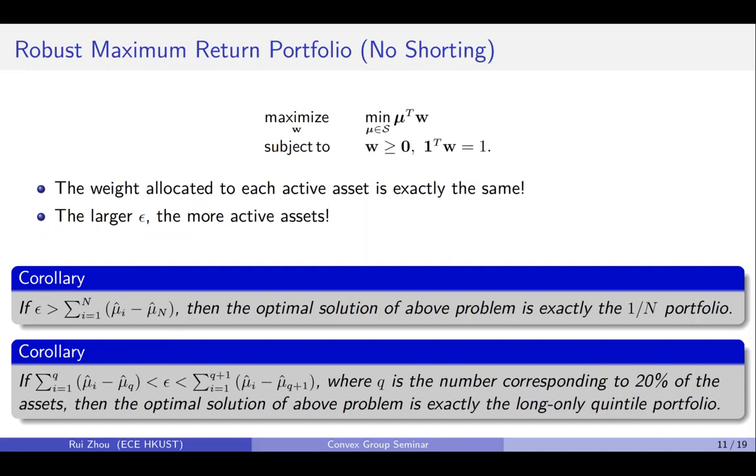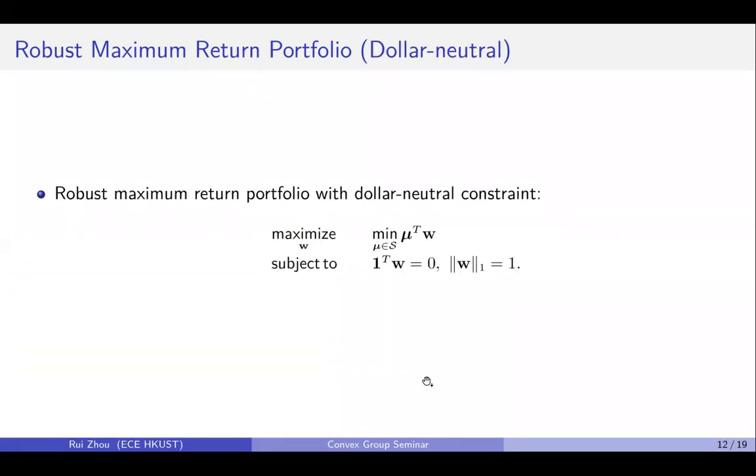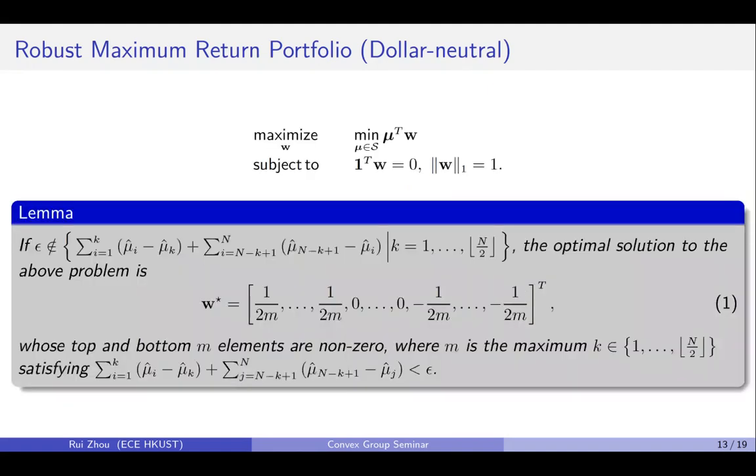So what about the long-short quintile portfolio? It turns out that you just need to replace the non-shorting constraint by this dollar-neutral constraint. Now the problem becomes non-convex, but still we can prove its optimal solution is given like this. So its top and bottom m elements are non-zero, and this m is also decided by the uncertainty level epsilon.